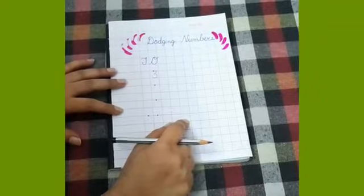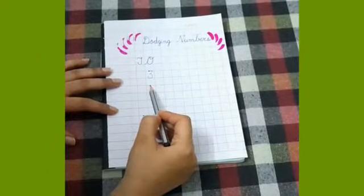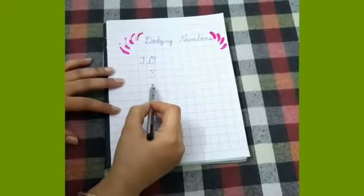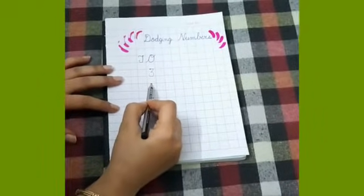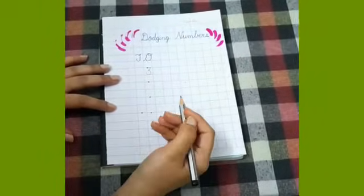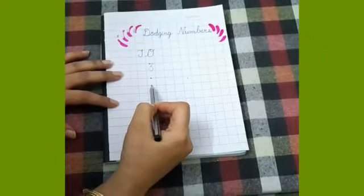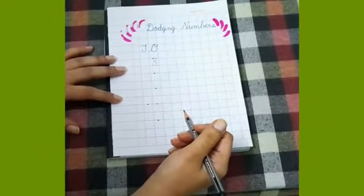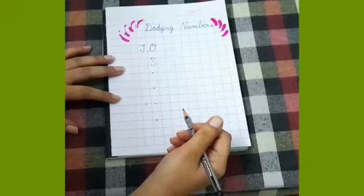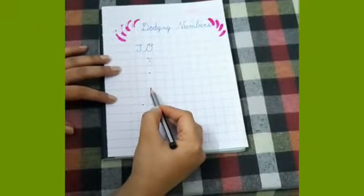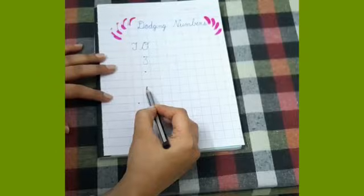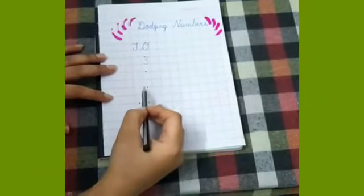Our second number is number 5. Write your second number. Number 5. Our next number is number 8. Number 8.